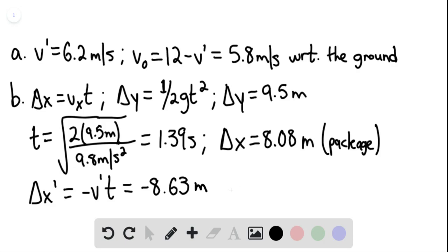The horizontal distance between them, delta X total, is 8.08 minus negative 8.63, or 8.08 plus 8.63, giving us approximately 16.7 meters between the helicopter and the package. This is the final answer for part B.